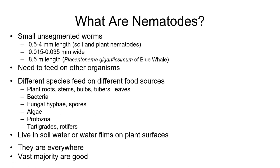There are also nematodes that feed on bacteria, fungal hyphae and spores, algae in soil, protozoans, and other soil organisms. There is a vast diversity of nematodes in soil, and the ones that feed on plants are just a portion of this much greater diversity of these unsegmented worms. Nematodes live in the water within soil pores. Those that live on the surface of plants need water films on plant surfaces, so they thrive more under humid conditions. They don't need saturated soil — just some water present.